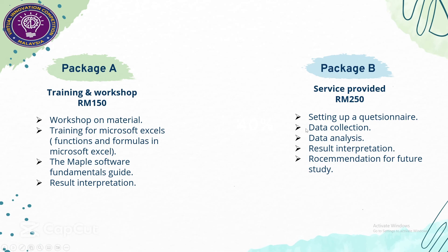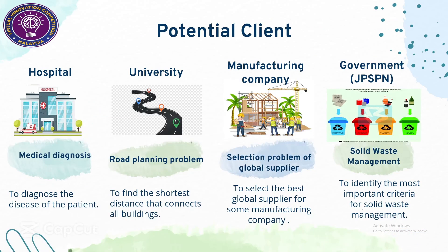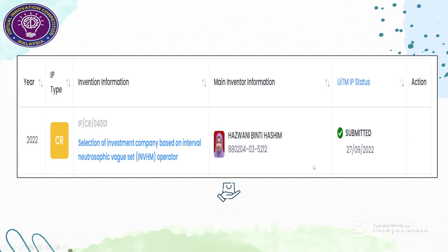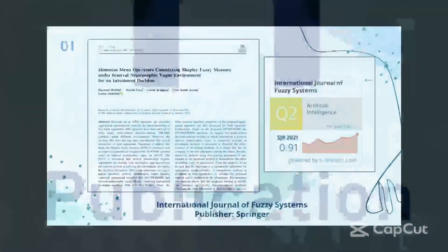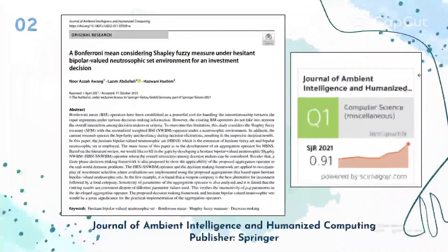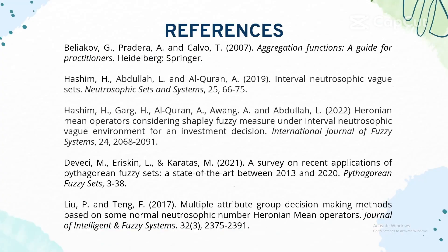For the commercial value, we offer two packages: a training workshop and a service package. For potential clients, hospitals can use it to evaluate the effectiveness of disease treatment for patients, universities can use it to find the shortest distance connecting all buildings, and it is also applicable for manufacturing companies and government. This is our copyright, and we have two publications. Some references are also provided.